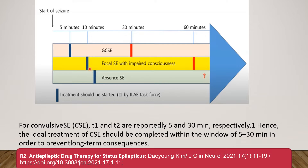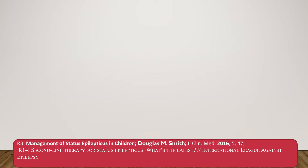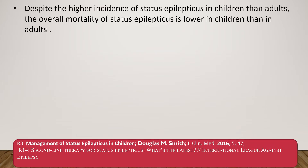For focal seizures, T1 is up to 10 minutes and control should be achieved by 60 minutes — you have more time. For absence seizures, you should intervene by 15 minutes, though the upper limit before control is not well established. Despite the higher incidence of status epilepticus in children than adults, the overall mortality is lower in children.